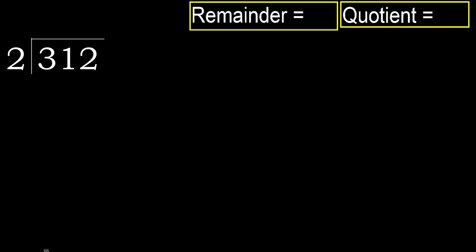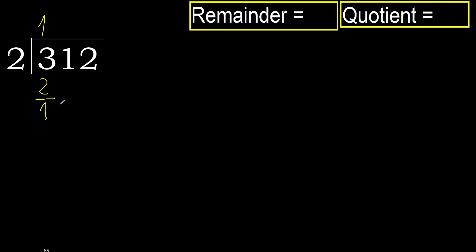312 divided by 2. 3 is not less, so with 3: 2 multiplied by which number is nearest to 3 but not greater? 2 multiplied by 2 is 4, which is greater. 2 multiplied by 1 is 2, which is not greater. So 3 minus 2 is 1. Next.